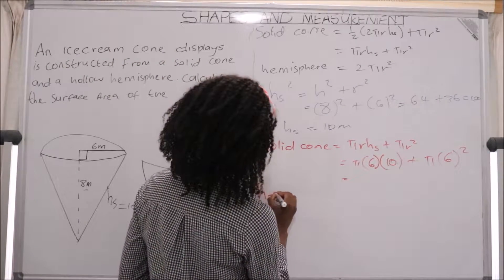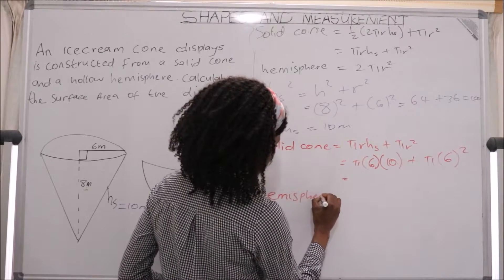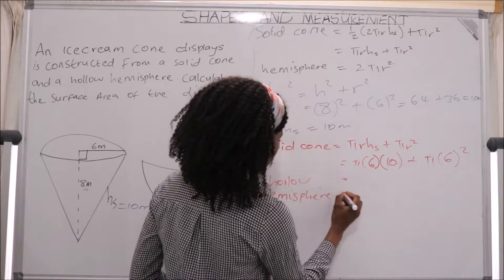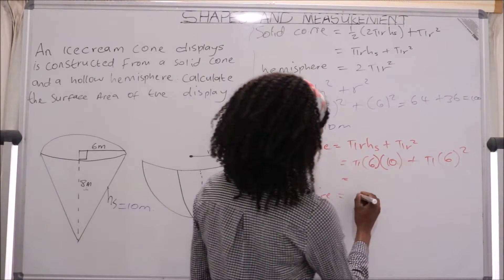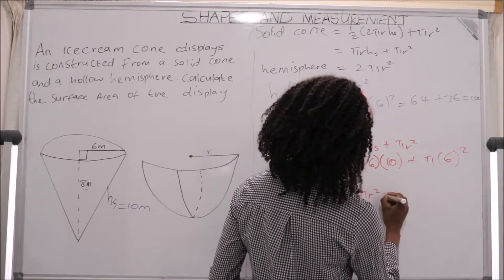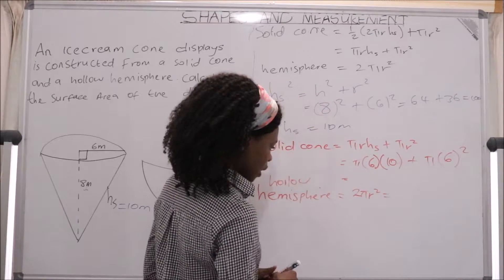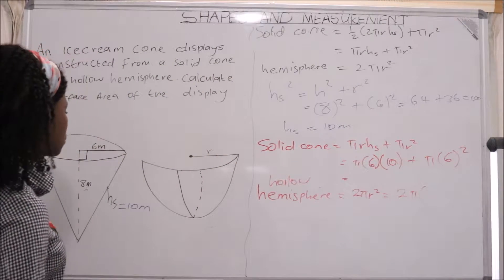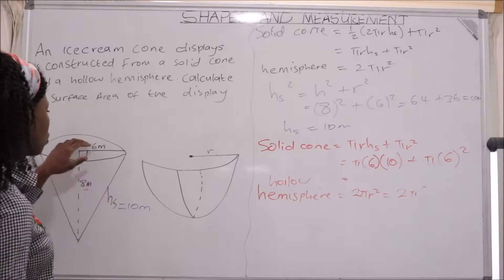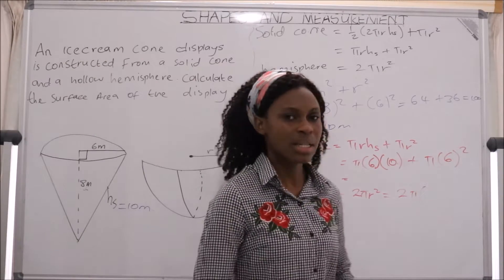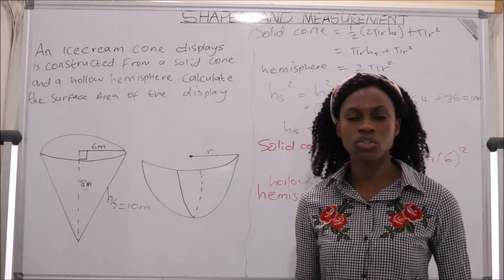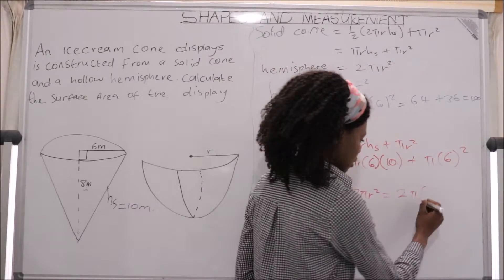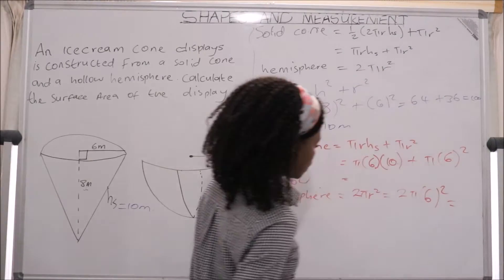Now we calculate the surface area of the hollow (open) hemisphere using 2πr². Since the hemisphere closes the cone, the radius of the hemisphere equals the radius of the cone — 6 meters. So we have 2π × 6², which gives us the hemisphere surface area.